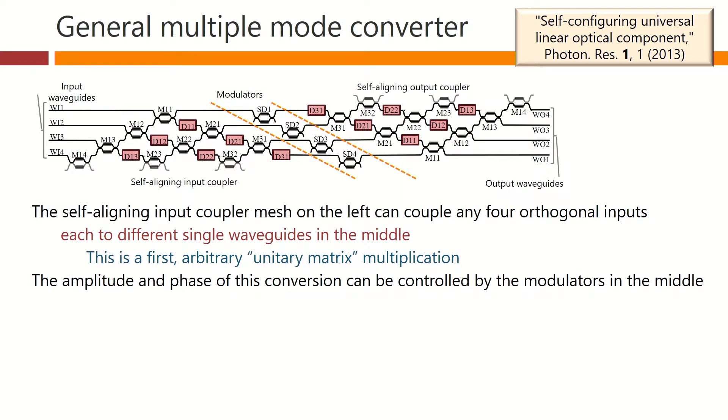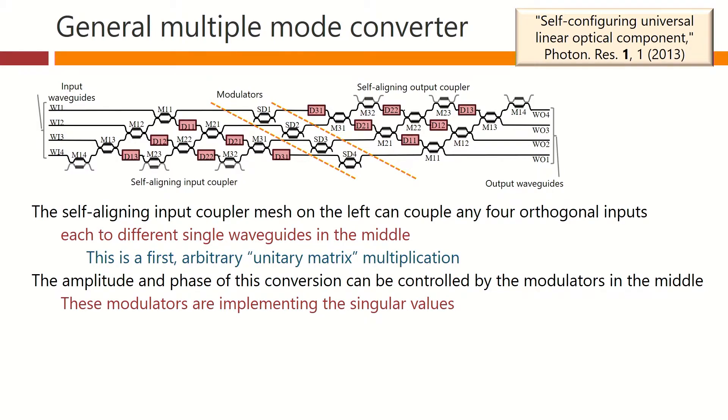The amplitude and phase of this conversion can then be controlled by the modulators in the middle. These modulators are implementing the singular values. They're the strengths of the connections. Light in these single waveguides now emerging from those modulators can be converted into any four orthogonal outputs on the right by self-aligning the output coupler mesh on the right. This is the second arbitrary unitary matrix multiplication.